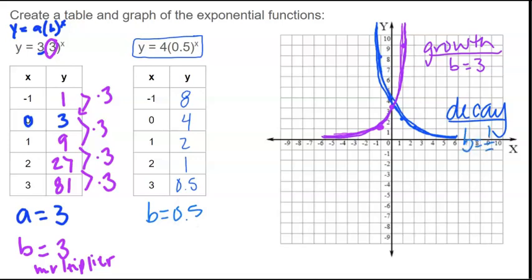And then for our blue function, the b value is 0.5, which, as a fraction, is half. So it was taking the numbers and cutting them in half each time. And that means the numbers are getting smaller as we multiply. So that makes it go down. So that's another way to know growth or decay is looking at that common ratio, that b value of your function.